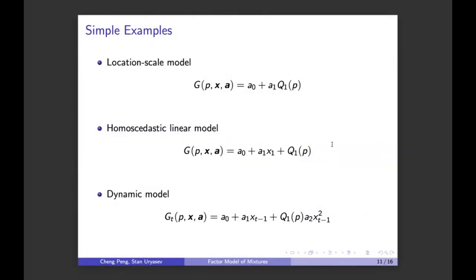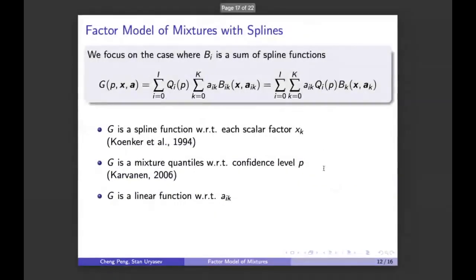Some very simple models — like location-scale, homoscedastic linear, and some simple dynamic models — are included in this general model formulation. One thing to mention is that for these models, we are not using maximum likelihood or any other estimation method; we are using joint quantile regression to estimate these simple models under our framework.